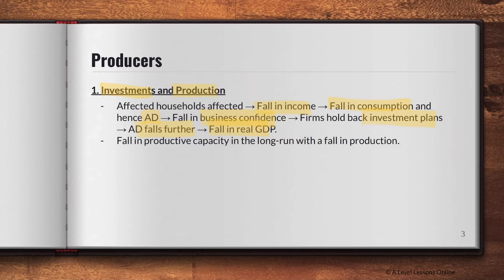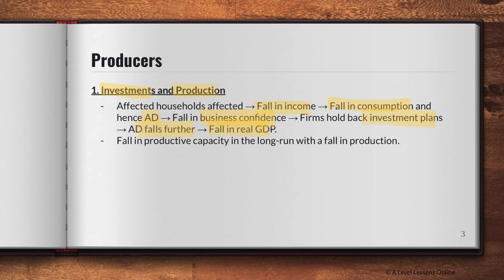When firms cut back on investments, this causes a fall in long-run aggregate supply, as we've learned. A fall in long-run AS leads to a fall in potential growth. So when looking at producers as a stakeholder, they cut back on investments, and this leads to a fall in productive capacity in the long run — a fall in long-run AS and hence a fall in production.